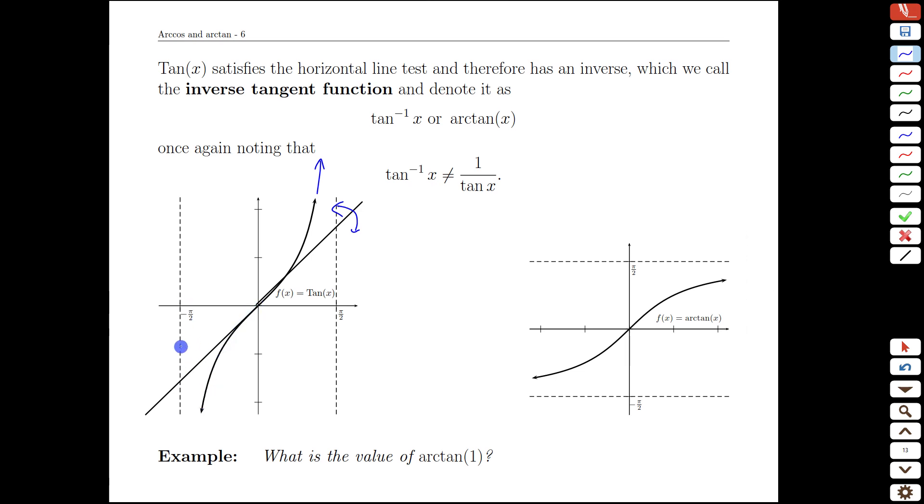This branch here, which approaches x equals negative pi over 2, when we flip it or reflect it, now approaches y values of negative pi over 2. As a quick calculation test, what's the value of arc tan of 1? Well, if we go to 1 here, we get a value, and it looks like it's about halfway. We can also go to our calculator, and when we do that, we get 0.785.